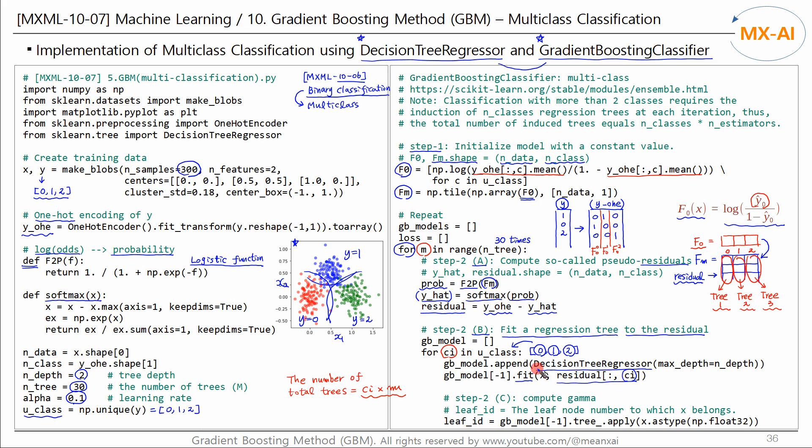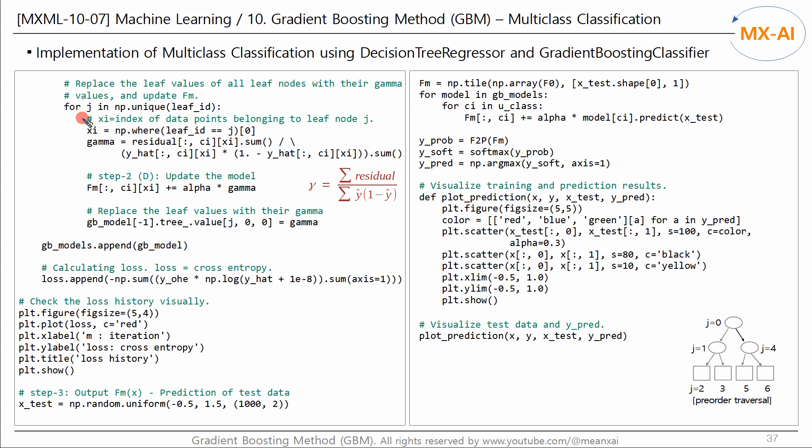In step C of step 2, the gamma is calculated. We then find the leaf node ID for each tree, as we did in the previous video. And read each tree's leaf node ID one by one to calculate the leaf value gamma. Find the data points belonging to leaf node J and use the residuals and Y hat to calculate the gamma with this formula. The shape of the residuals and Y hat is also like this. Find the data points belonging to leaf node J for each column and calculate their gamma.